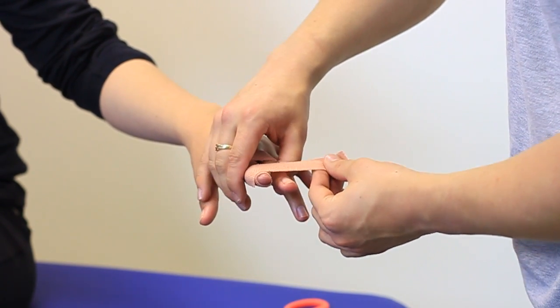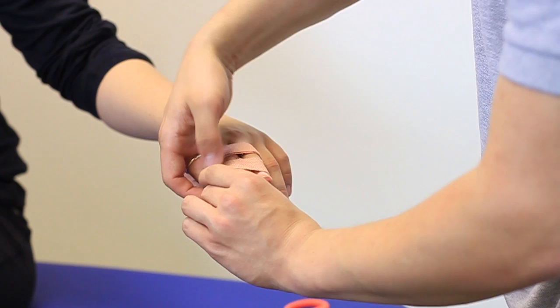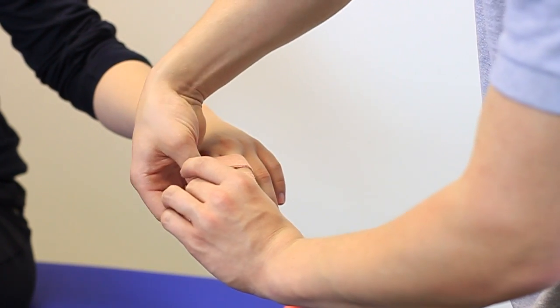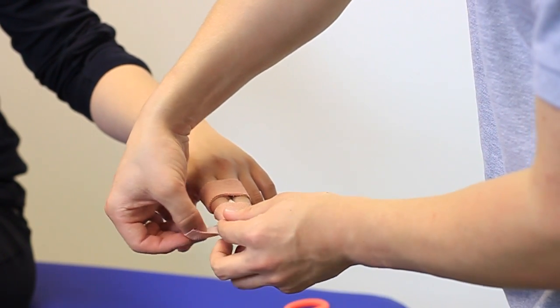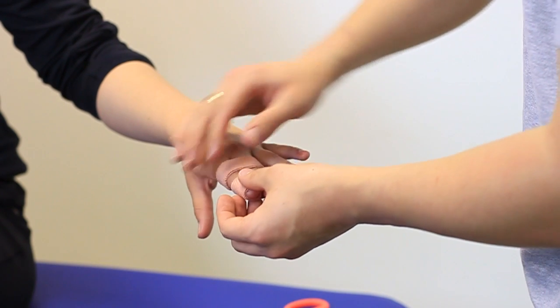We're just going to apply tape right again at the bottom of the fingers. Just keep them nice and tight together. Make sure they're straight all the way through.